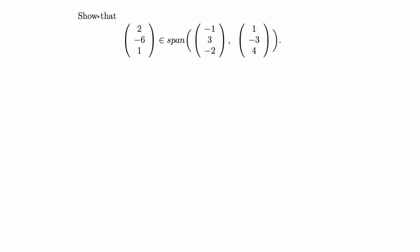In this video I'm going to do this linear algebra problem. It says show that the vector (2, -6, 1) belongs to or is in the span of the set of vectors v1 and v2, where v1 is (-1, 3, -2) and v2 is (1, -3, 4).